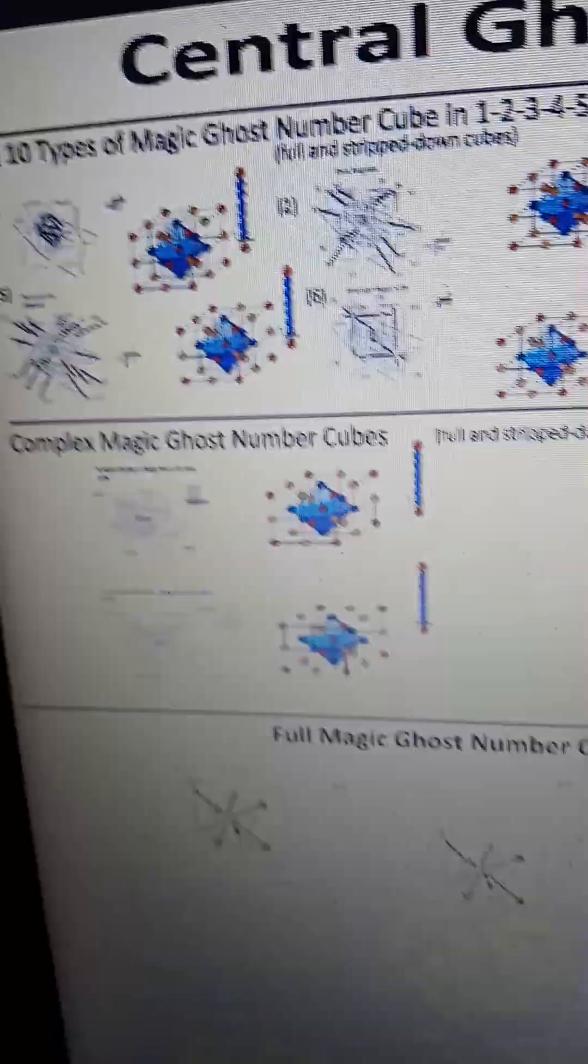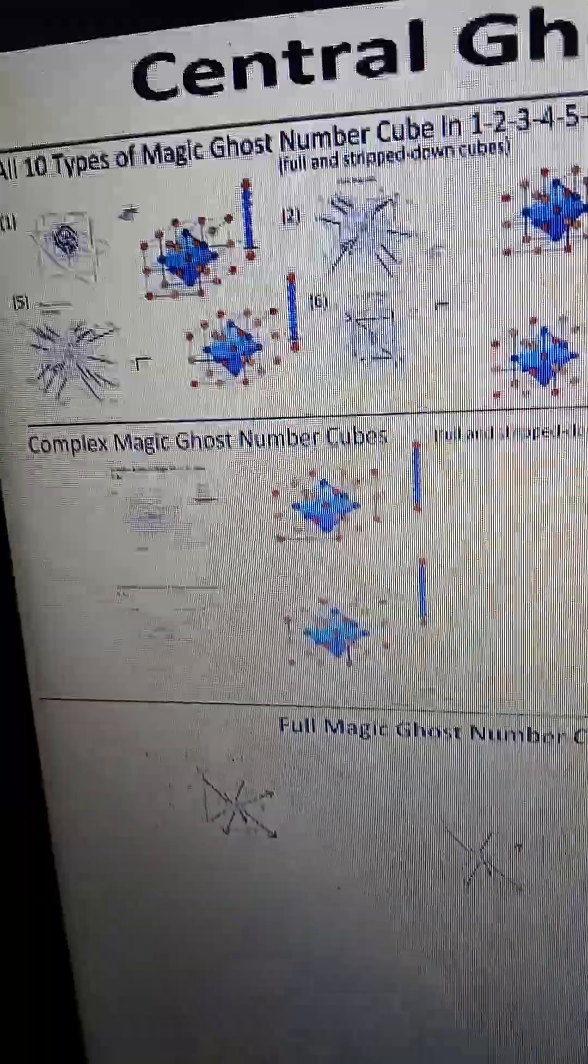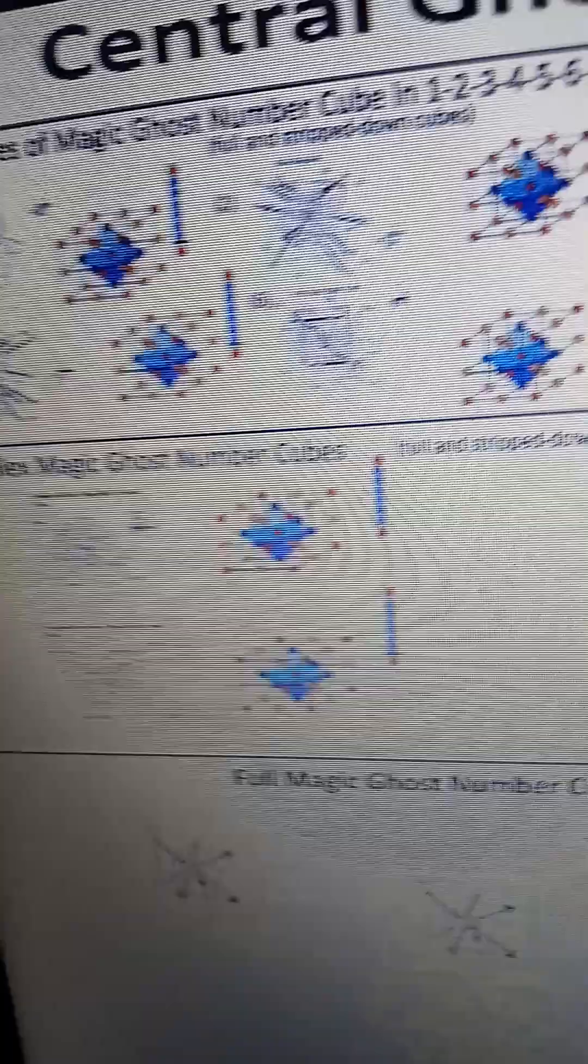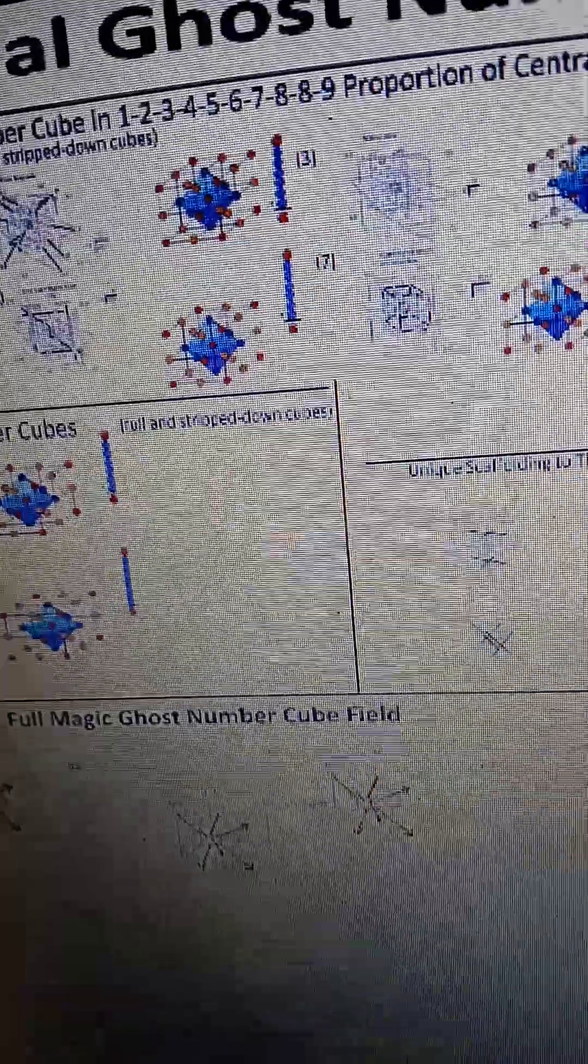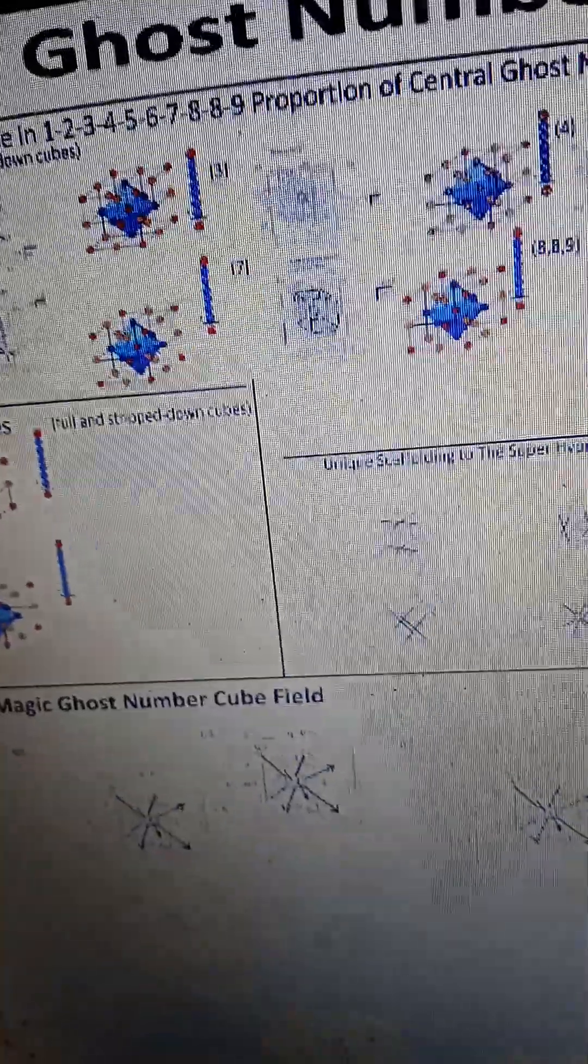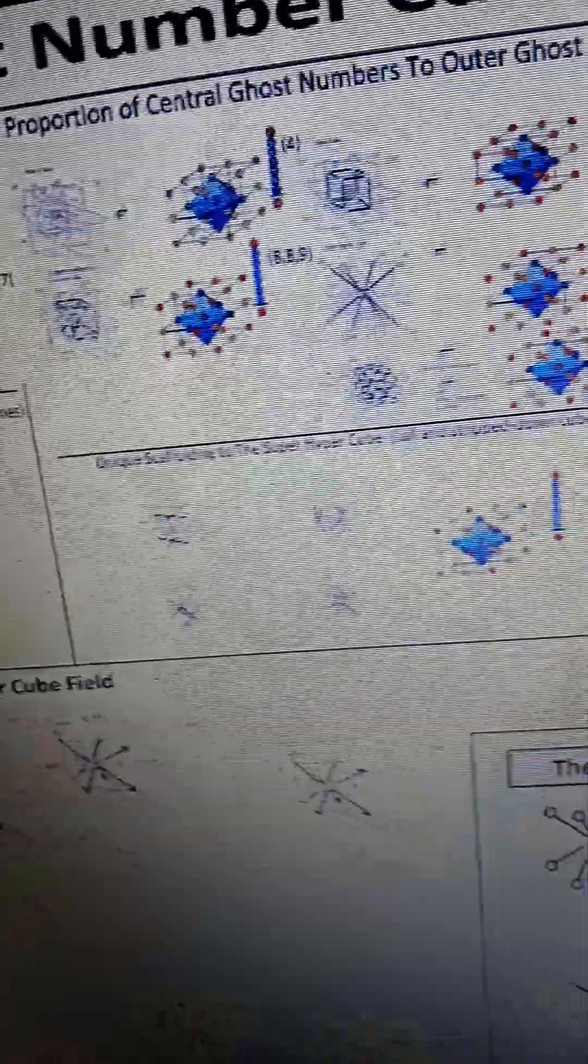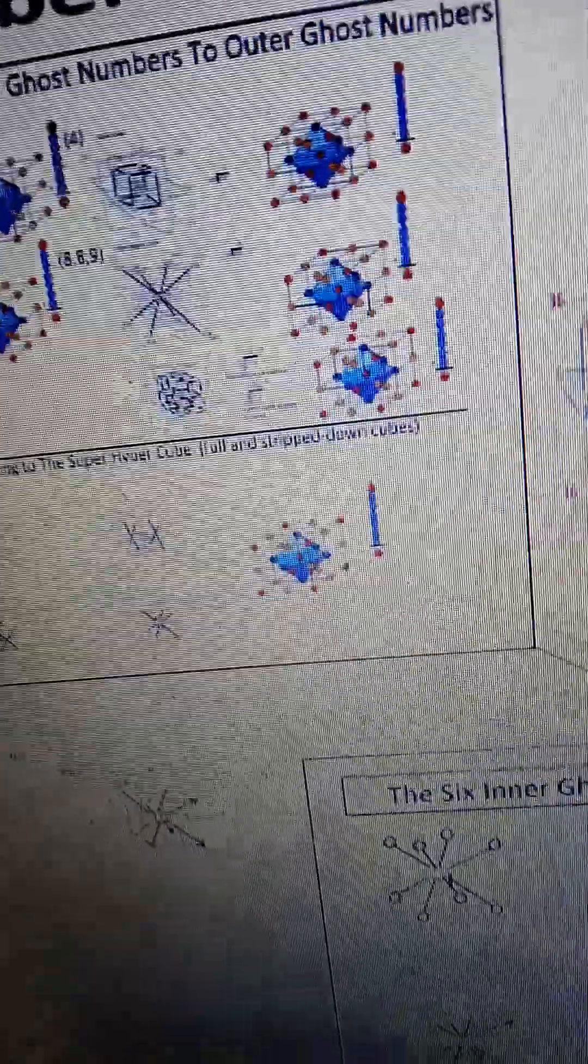These are all 10 types that a magic ghost number cube can appear in. And they're from proportions 1, 2, 3, 4, 5, 6, 7, 8, 8, and 9. And they're stripped down ghost number cubes beside them.